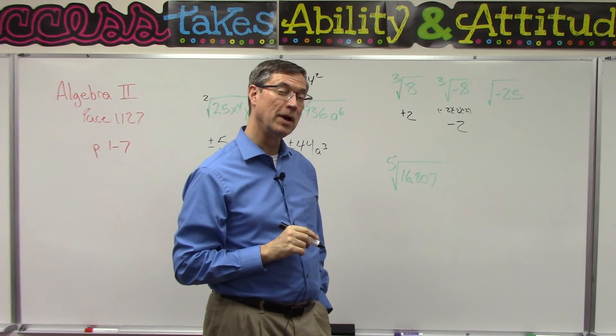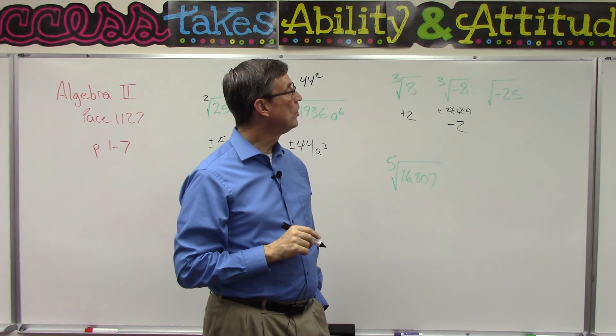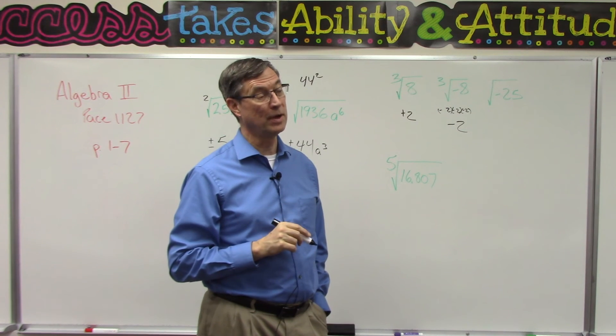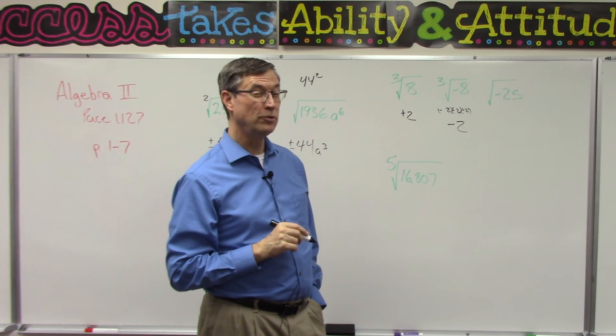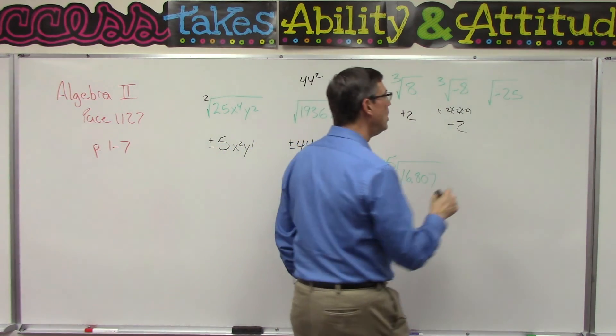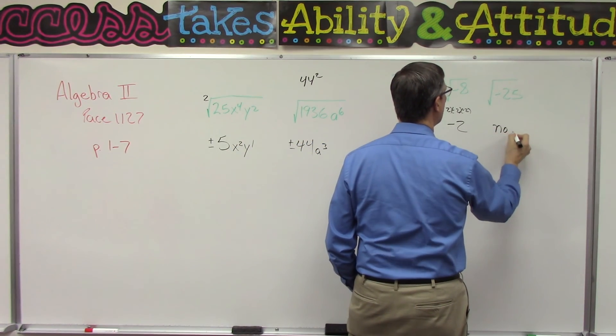So there is no number that multiplied times itself equals negative 25, until we get to a future pace where we learn about imaginary numbers. But for now, we can just say 'no root.'